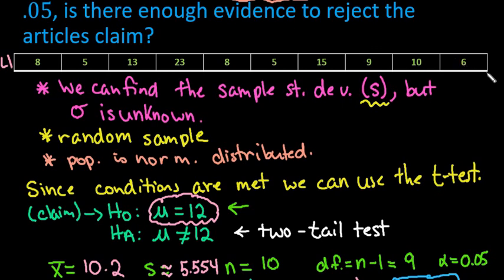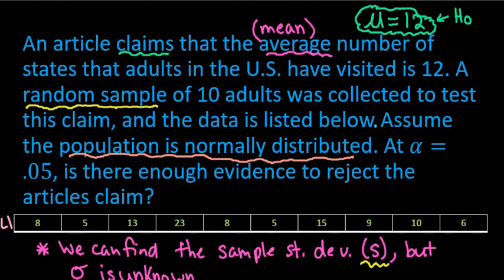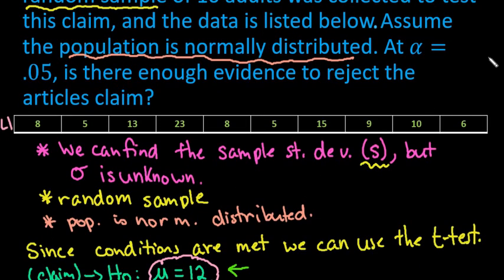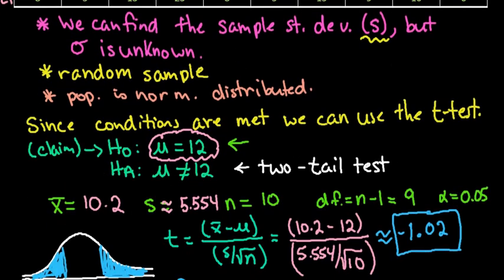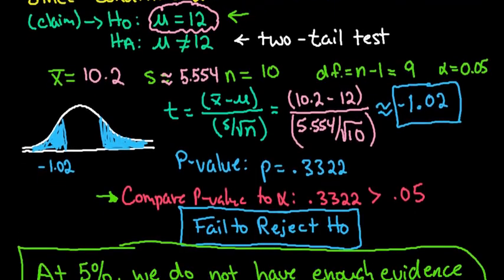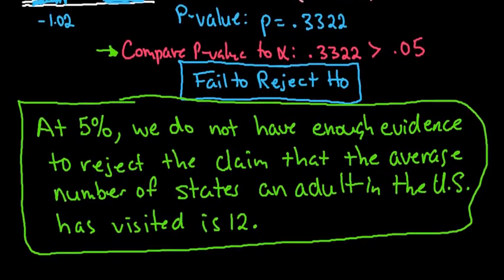So just to recap a hypothesis test. When you're running a hypothesis test, you first want to look for words like mean or proportion to help you determine which kind of tests you're using. You want to go through the conditions for your tests. You want to state the null and the alternative. Show out your work and draw your model. And then come to your conclusion. As always, thanks for watching. If you have any questions, please let me know. If there are additional topics you need me to cover, please let me know that as well.